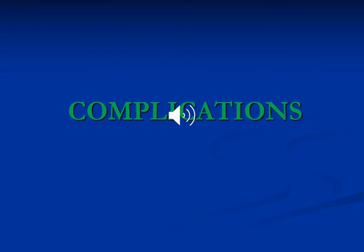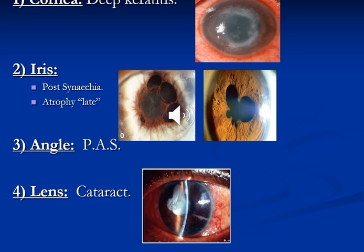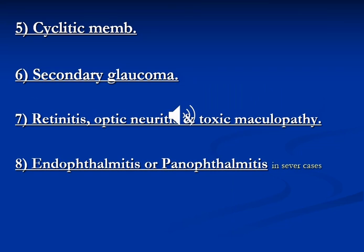What are the complications of uveitis? The complications include deep keratitis, formation of synechiae — which could be posterior or peripheral anterior synechiae — and cataract formation. Other complications include cyclitic membrane, secondary glaucoma, retinitis or optic neuropathy, and endophthalmitis or panophthalmitis in severe cases.